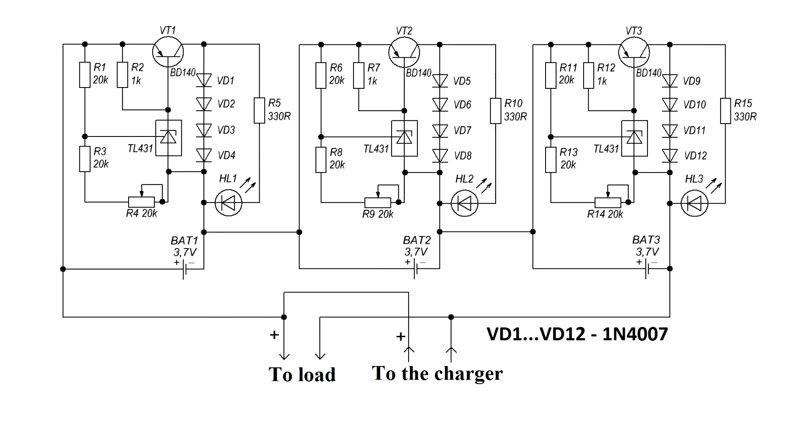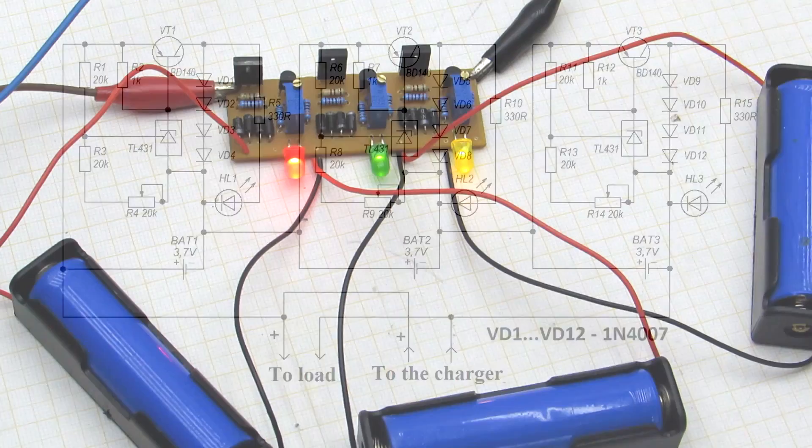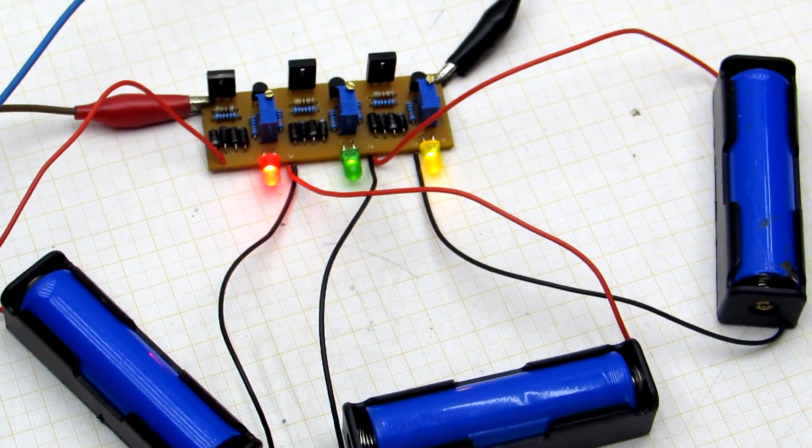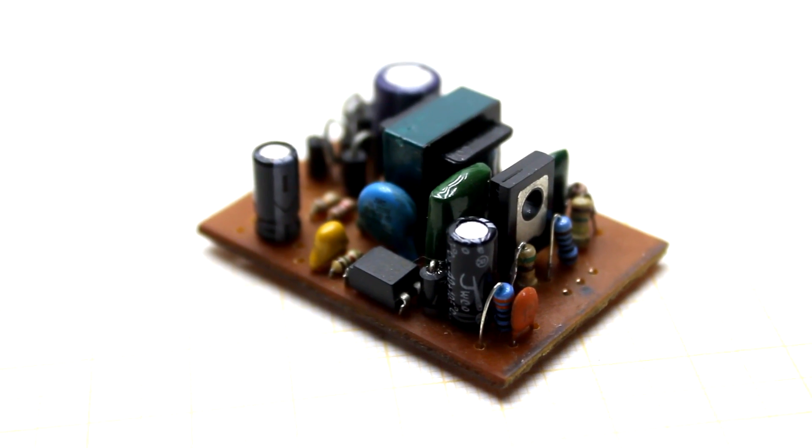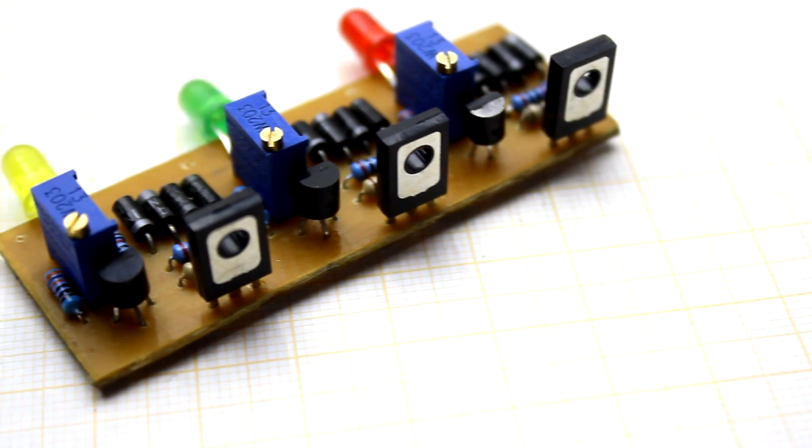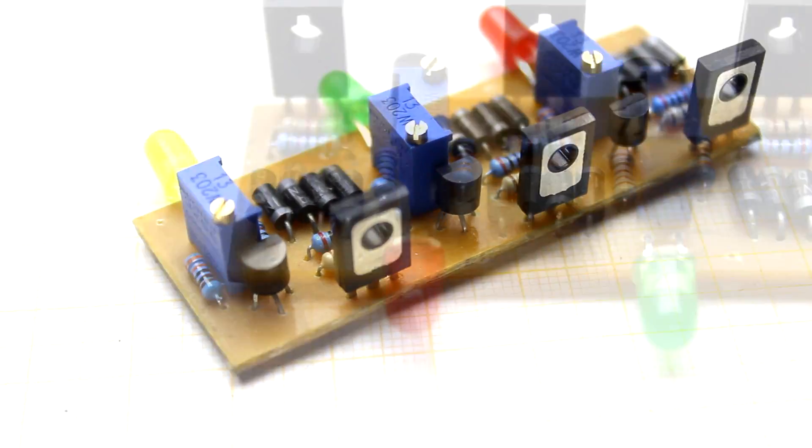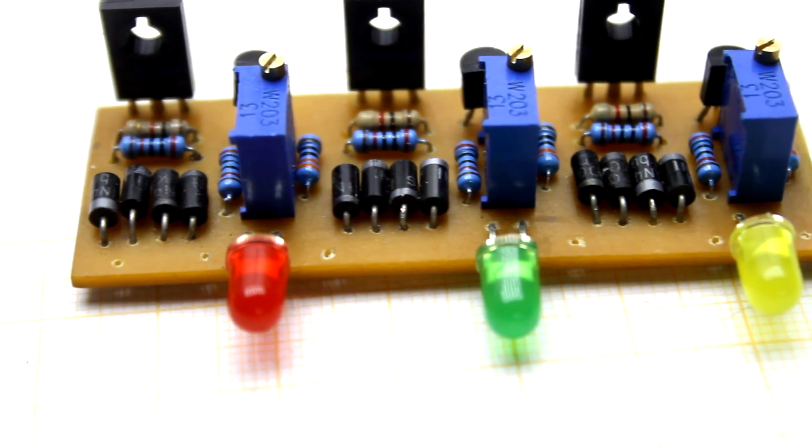Today we will examine a circuit that will allow charging lithium ion cans connected in series, as well as balancing them in the process of charging. This circuit is not only simple, but also very effective. The coefficient of efficiency here isn't very important, as the charger is powered from the network. Link to the detailed article about this circuit you will find in the description.